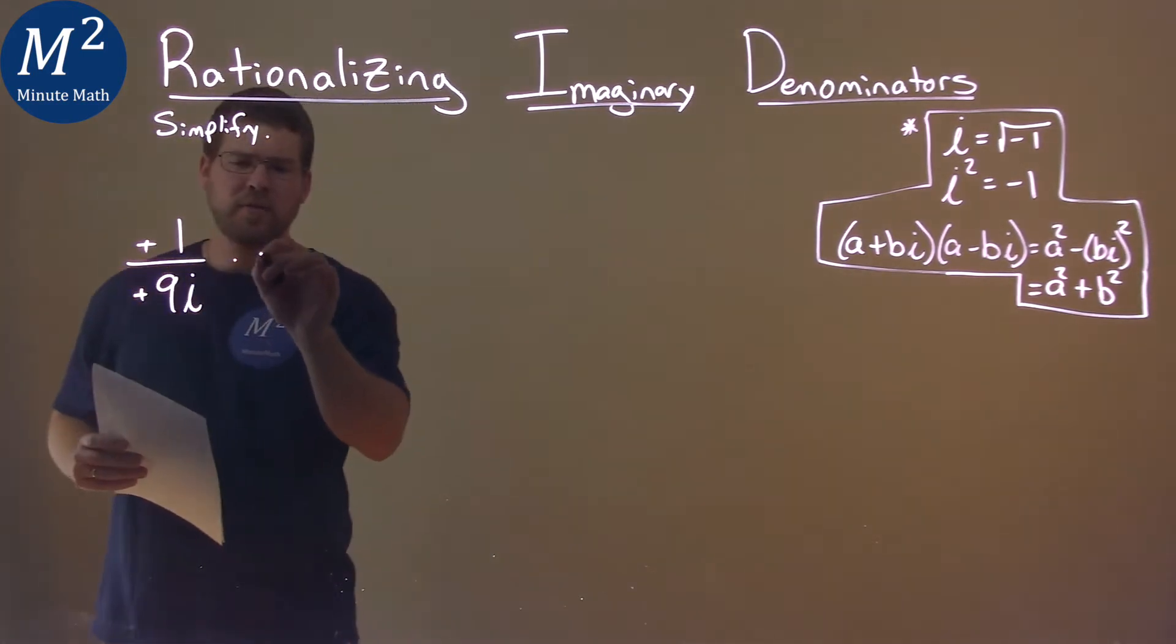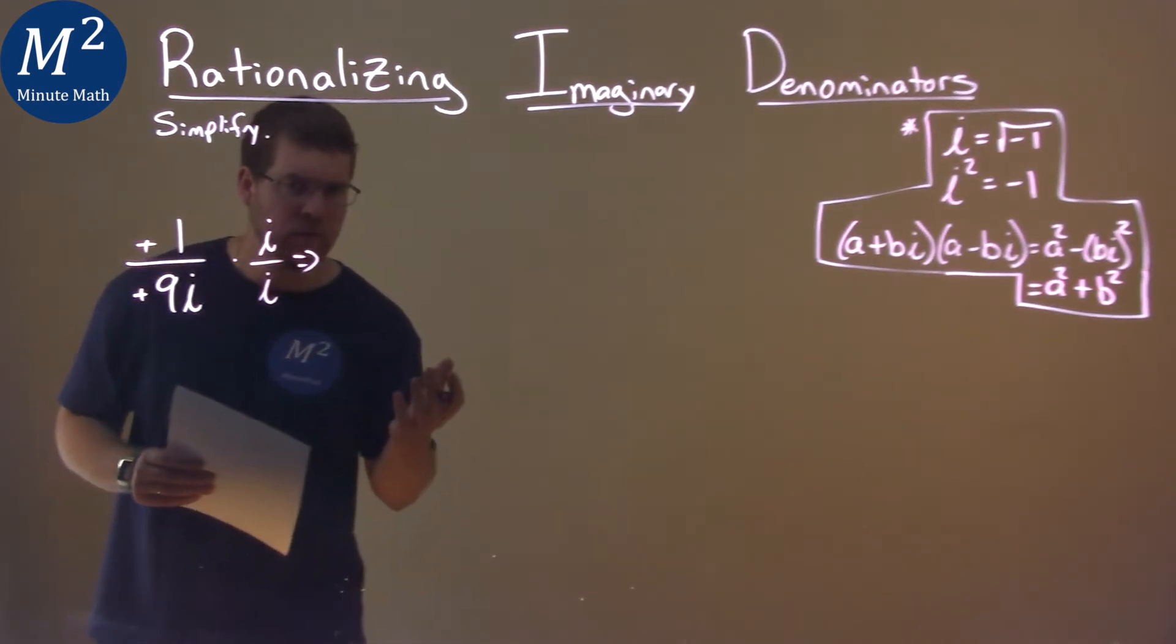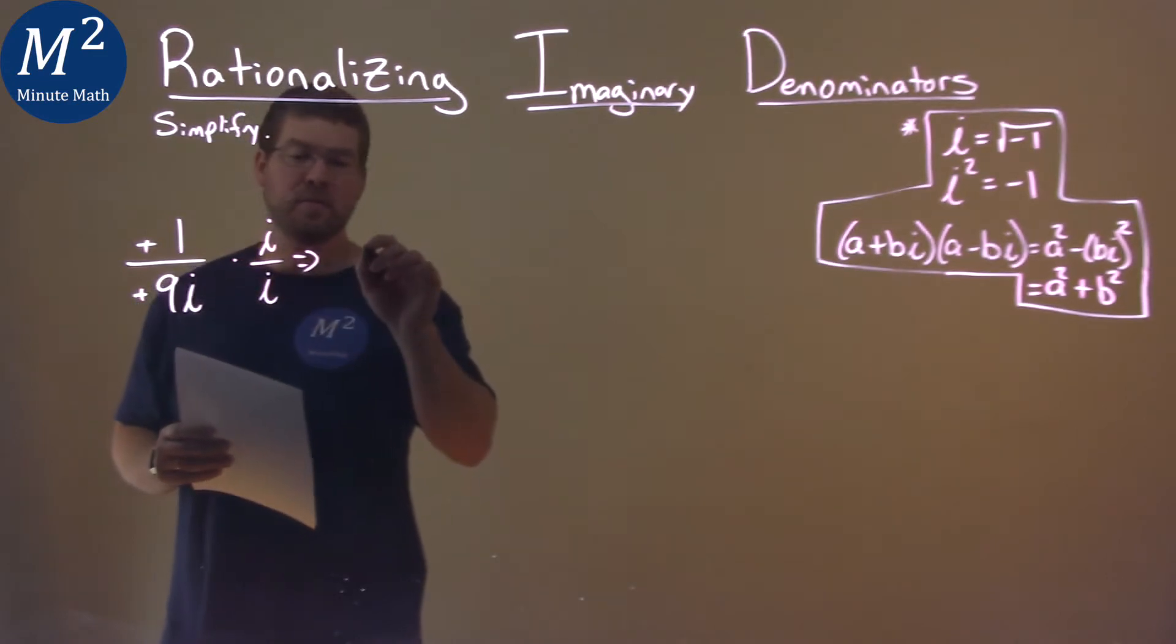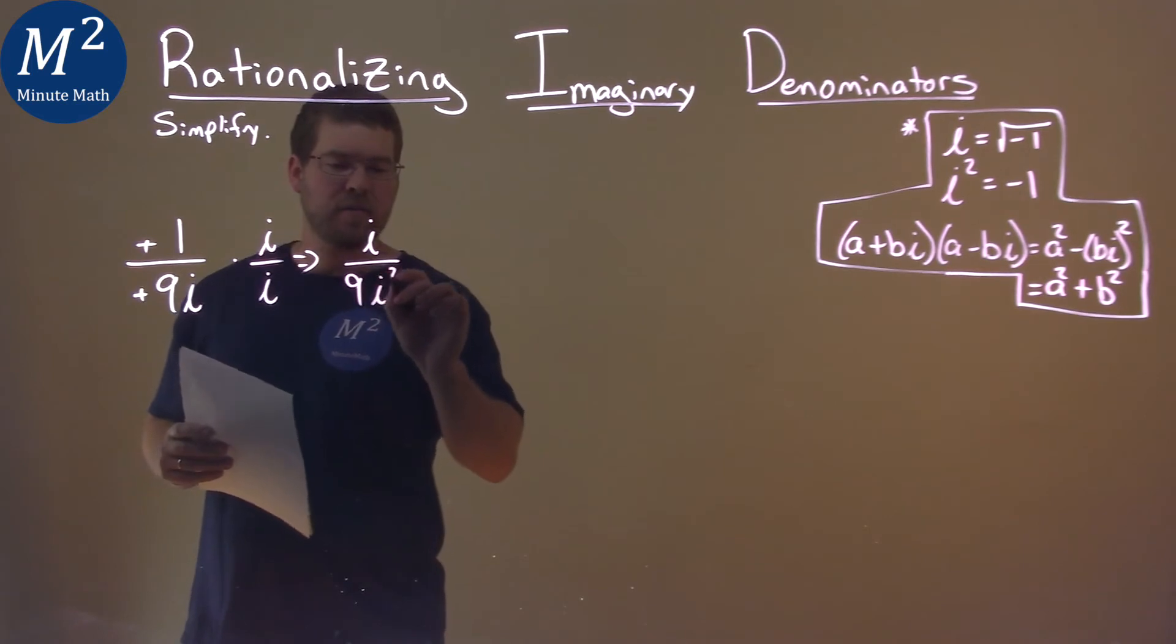Now I can multiply this by i over i here. And what happens? Well, we multiply across the numerator. 1 times i is just i. 9i times i is 9i squared.